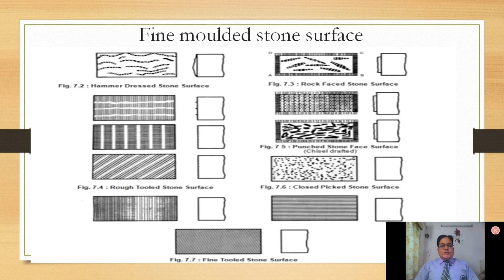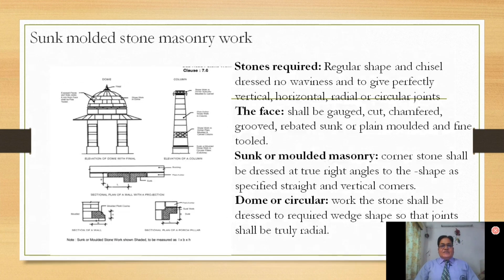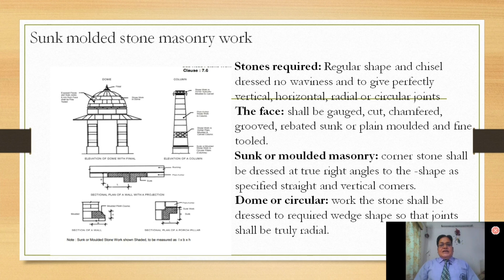This figure shows various fine molded stone masonry surfaces. We can see what its effects are if it is hammer dressed, rock faced, rough tooled, fine tooled — as per the requirement we can dress the stone. This dressing of the stone is also known as molding of the stones and it should be molded to the required size. For advanced application, such as sunk molded stone masonry, the stones required are regular in shape, chiseled, with no waviness, and horizontal and vertical joints should be perfect. You can see a very nicely constructed dome with stone masonry where all dimensions are perfectly geometrical.